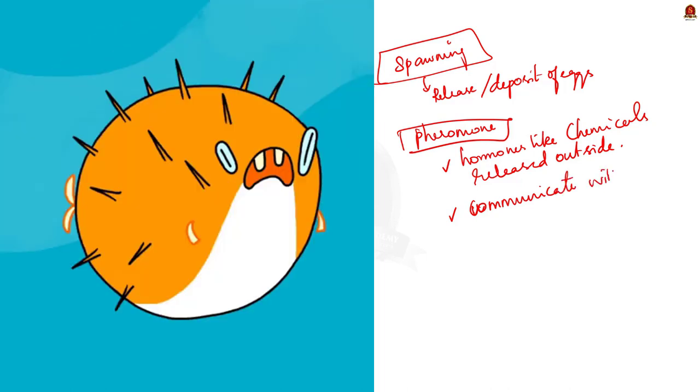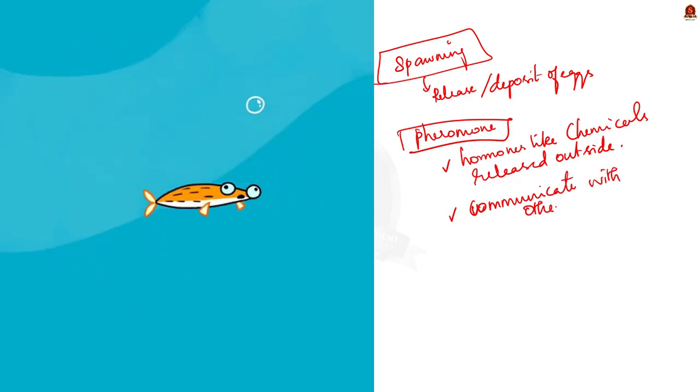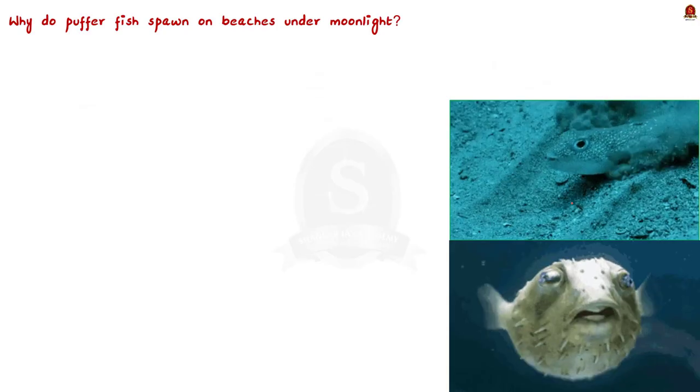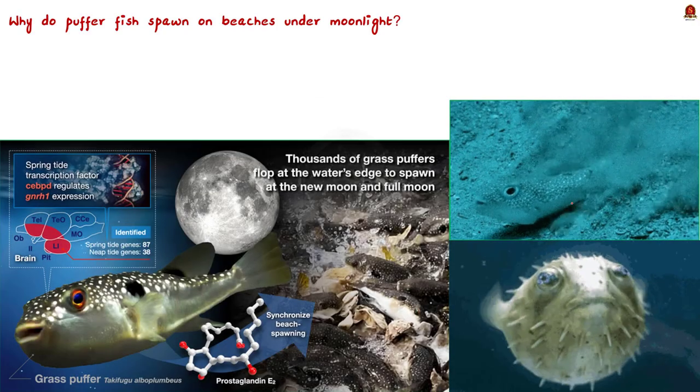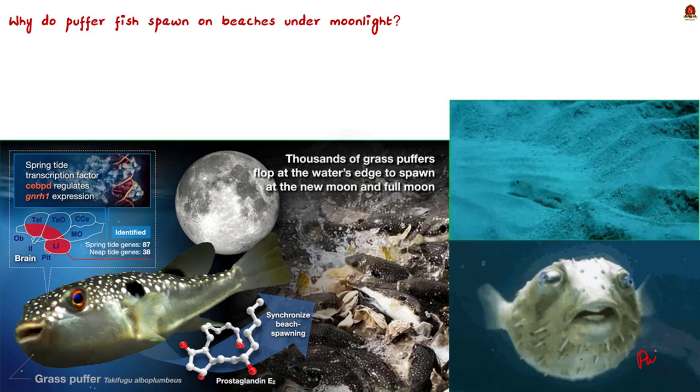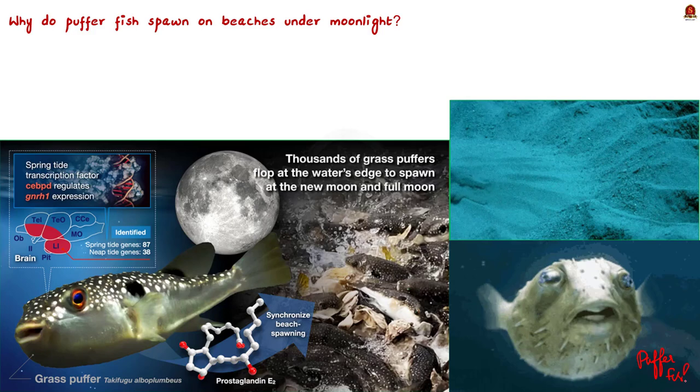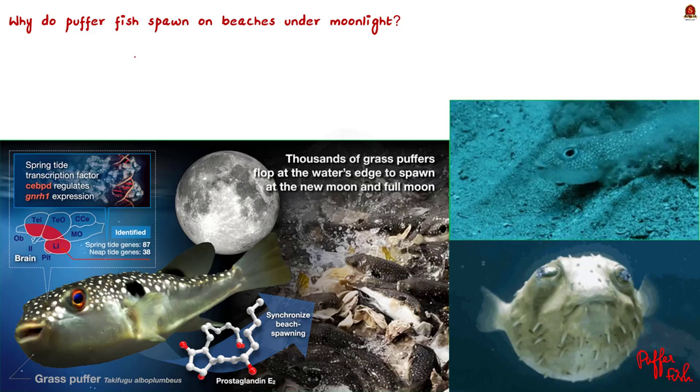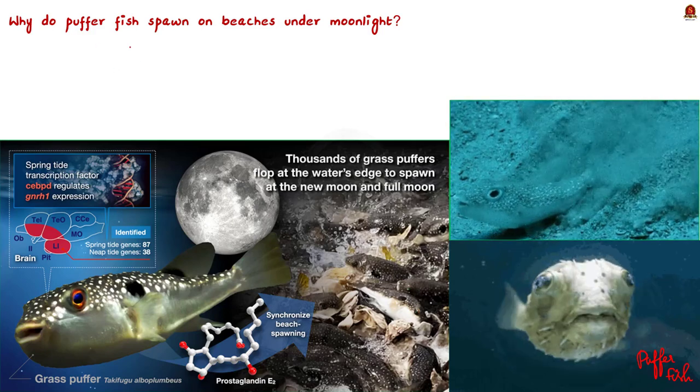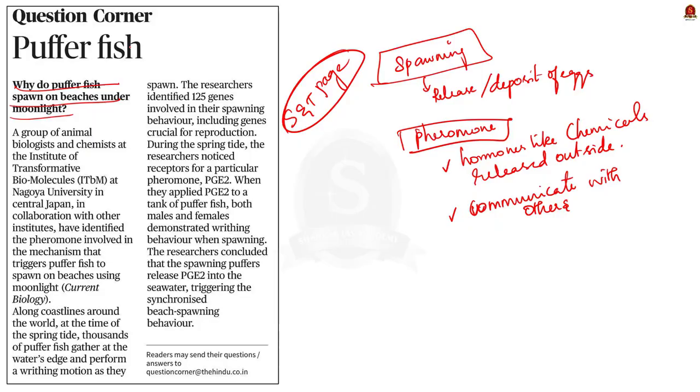Now coming back to the question, why do puffer fish spawn on beaches under moonlight? Puffer fish normally spawn along the coast at night during spring tide. After studying the genetic makeup of the puffer fish, scientists concluded that this behavior is due to the release of a particular pheromone called PGE2.